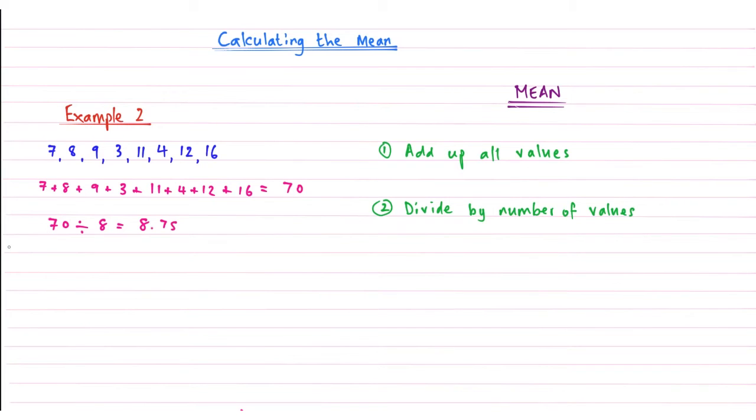And so write this down. So the mean of that data set is 8.75. Underline my answer for neatness. And that's example number 2 done.